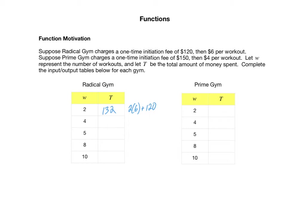What if they had worked out four times? They would have to pay $6 four times and then also the initial $120 initiation fee. Here we've got $24 plus $120, which is $144.